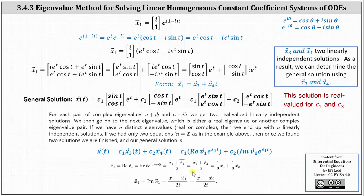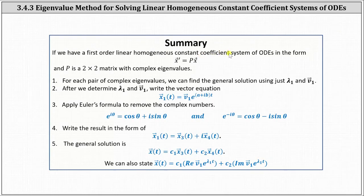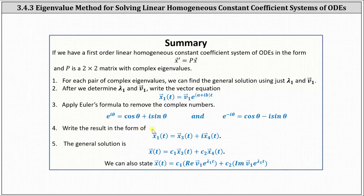Also notice there are some additional formulas below to help determine X₃ and X₄. To summarize: if we have a first-order linear homogeneous constant coefficient system of ODEs in the form X prime equals P times X and P is a two-by-two matrix with complex eigenvalues, step one — for each pair of complex eigenvalues, find the general solution using just lambda sub one and vector V sub one. After determining lambda sub one and V sub one, write the vector equation X₁ of T equals V₁ times e to the power of A plus iB times T. Next, apply Euler's formula to remove the complex numbers. Step four, write the result in the form X₁ of T equals X₃ of T plus i times X₄ of T. Then using X₃ and X₄, write the general solution as X of T equals C₁ times X₃ of T plus C₂ times X₄ of T.